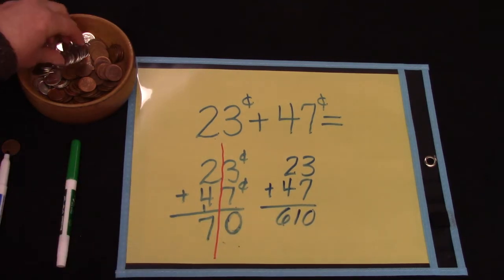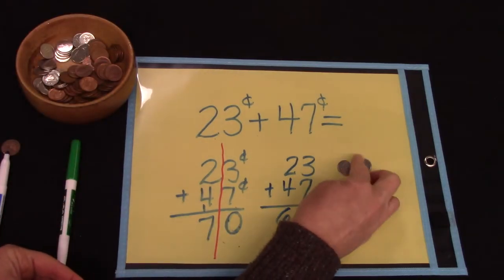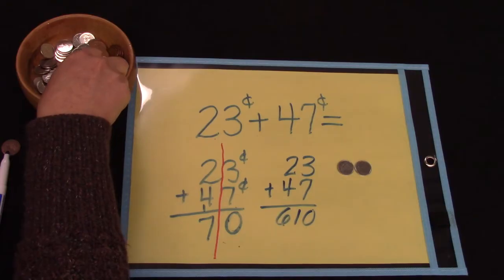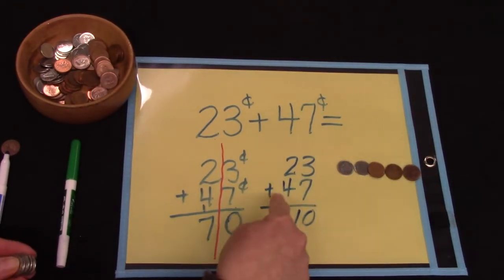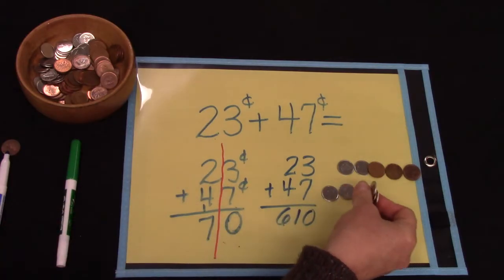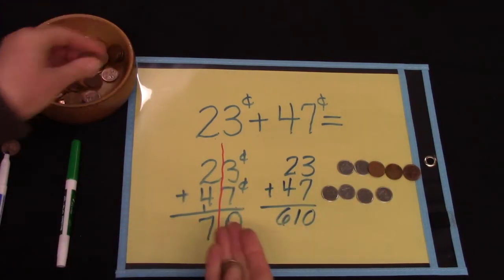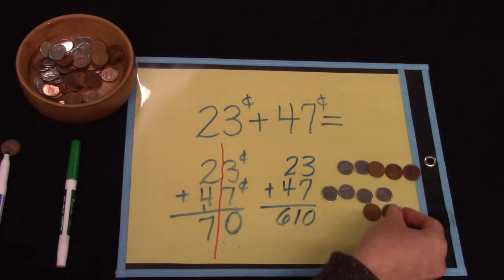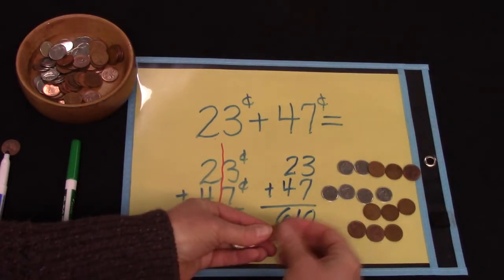Well let's check this with our money. In this one we have 23 cents: 1, 2, 3 and then 47: 1, 2, 3, 4 or 10, 20, 30, 40 and then 7 cents: 1, 2, 3, 5, 6, 7.